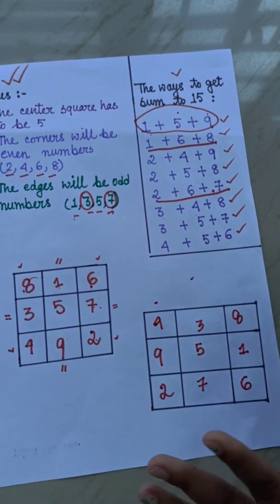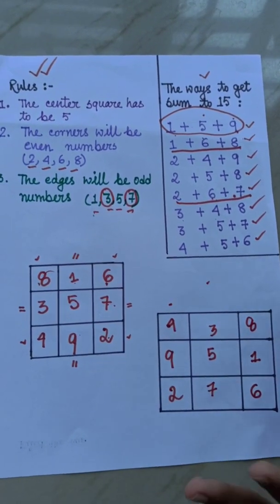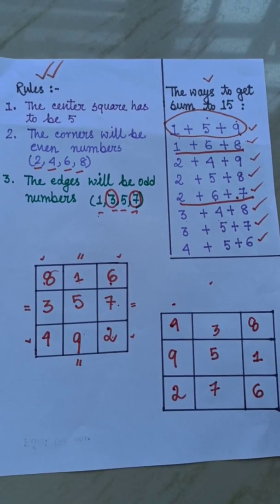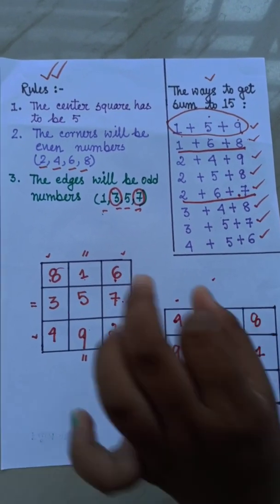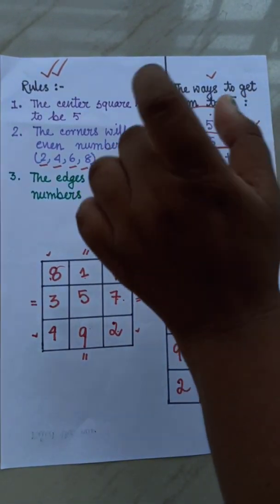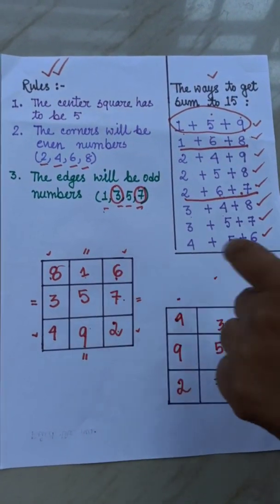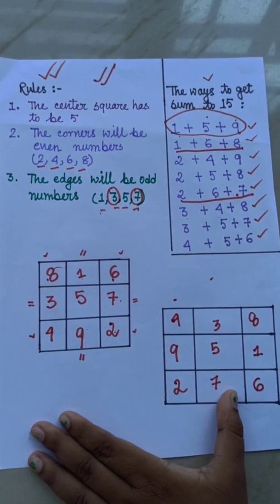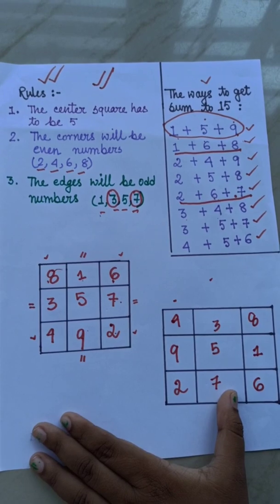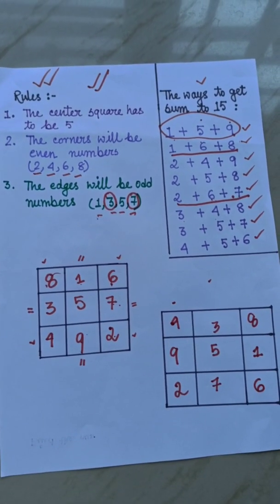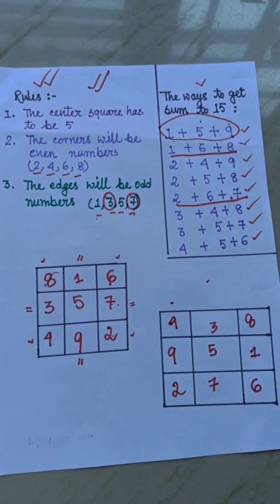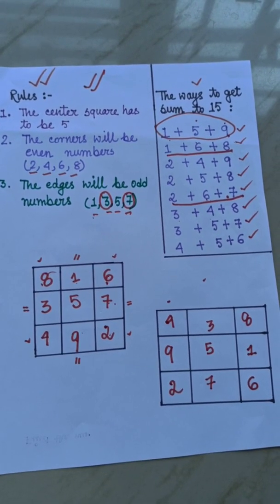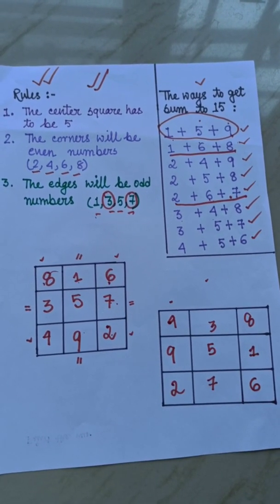In this way you can make a magic pattern or magic square. Many magic squares can be made using these 3 rules. It is very helpful for making magic patterns or magic squares. You will practice at home, and in the next video we will carry forward with the next discussion. Thank you.